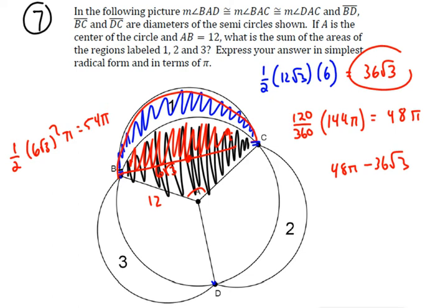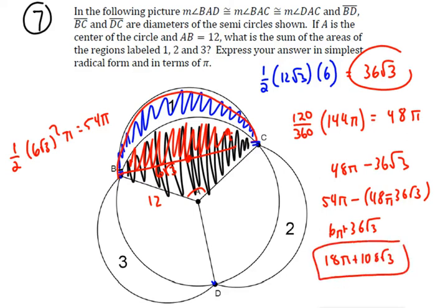That means for each one of these, it's going to be 54 pi minus 48 pi minus 36 root 3, which gives you 6 pi plus 36 root 3. And then when you multiply by 3, you end up with 18 pi plus 108 root 3. And that is the area of those three sections 1, 2, and 3.